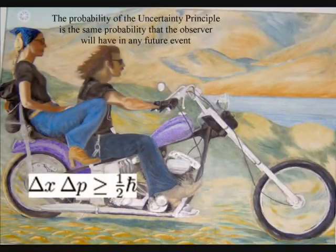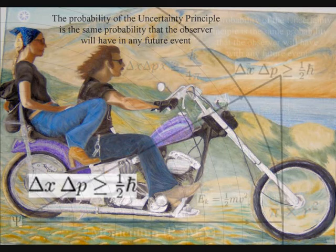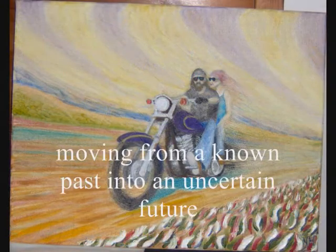The second idea is that Heisenberg's uncertainty principle is the same uncertainty that we have with any future event. From these two simple ideas, quantum mechanics can be explained in a way that exactly fits in with our everyday experience of nature and time, moving from a known past into an uncertain future.